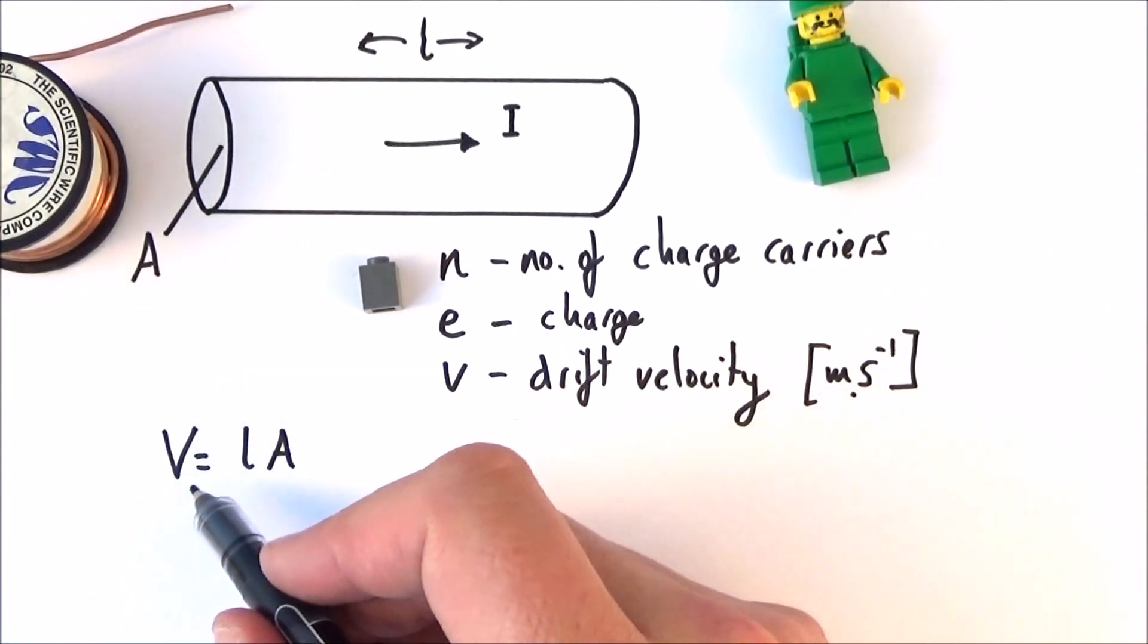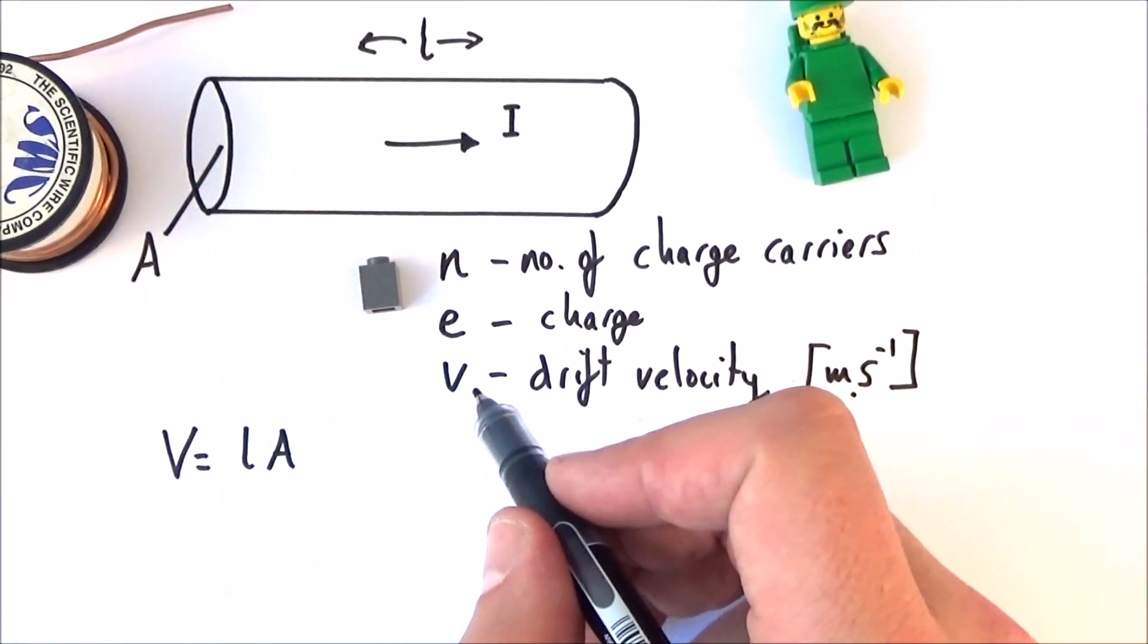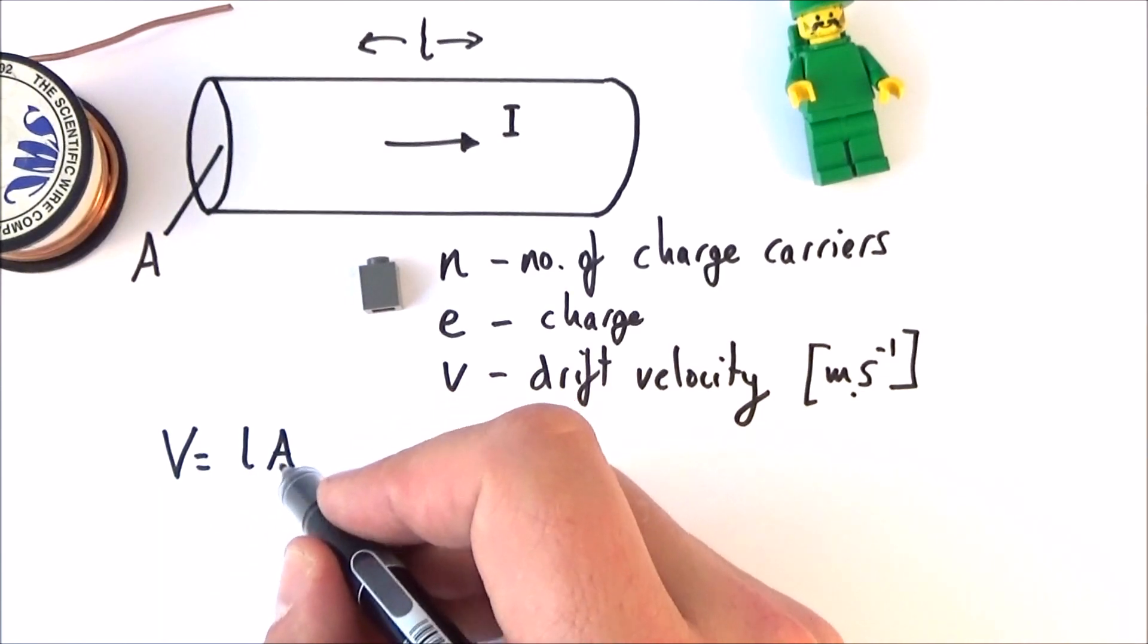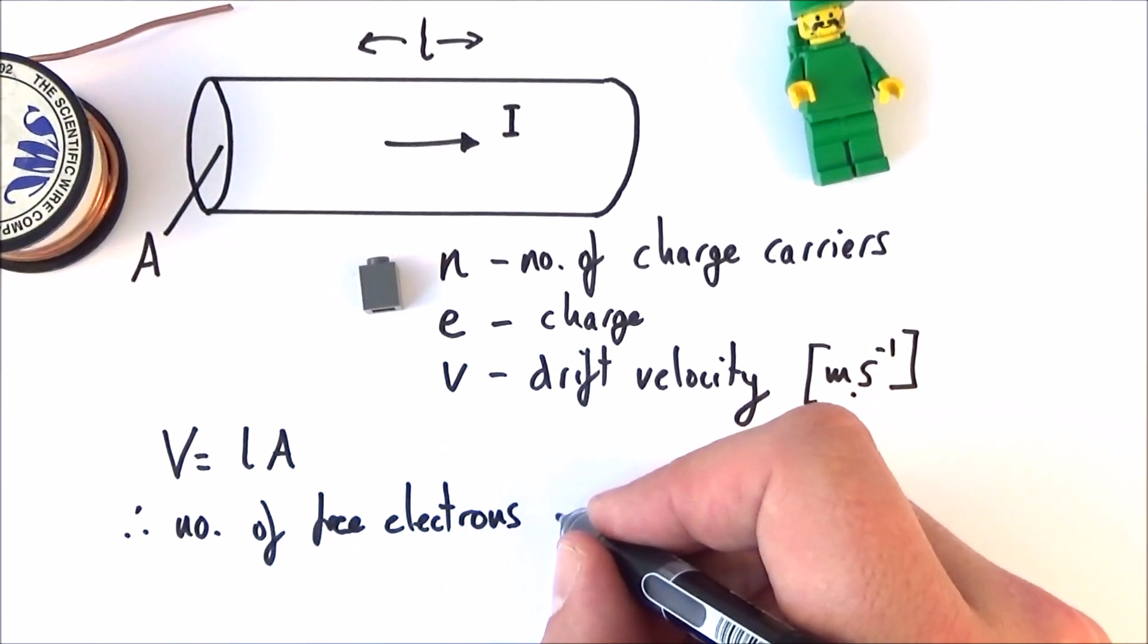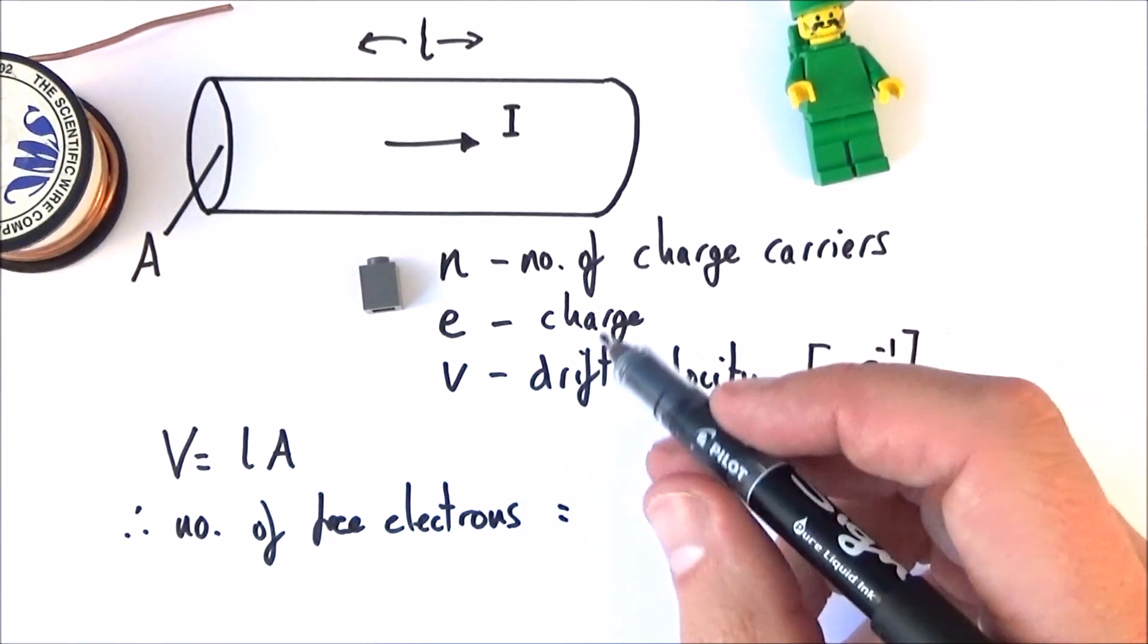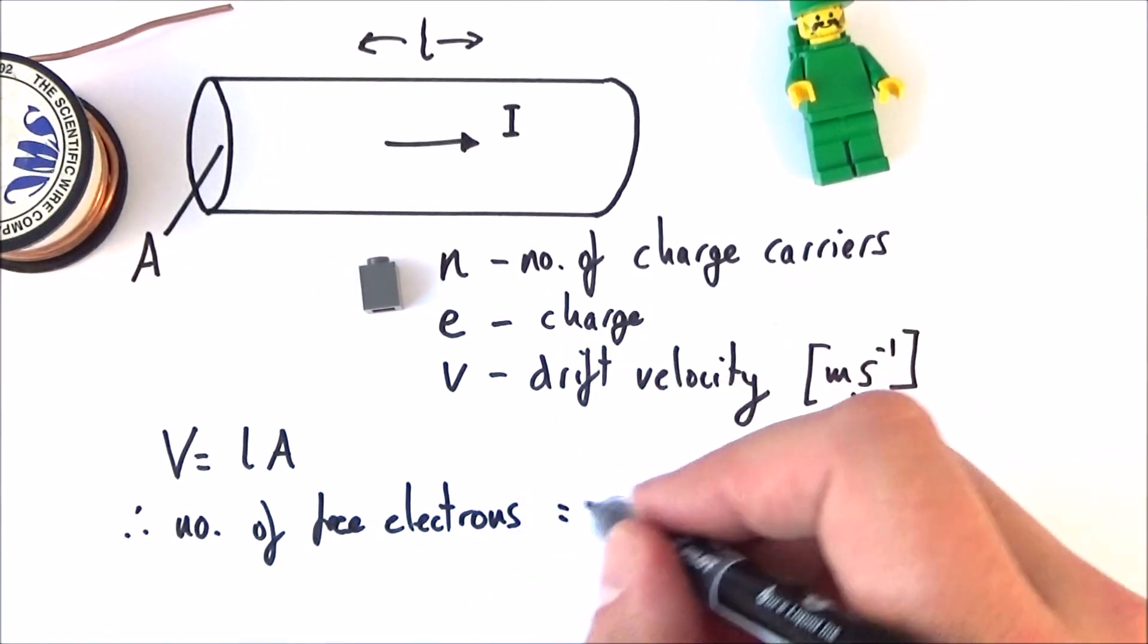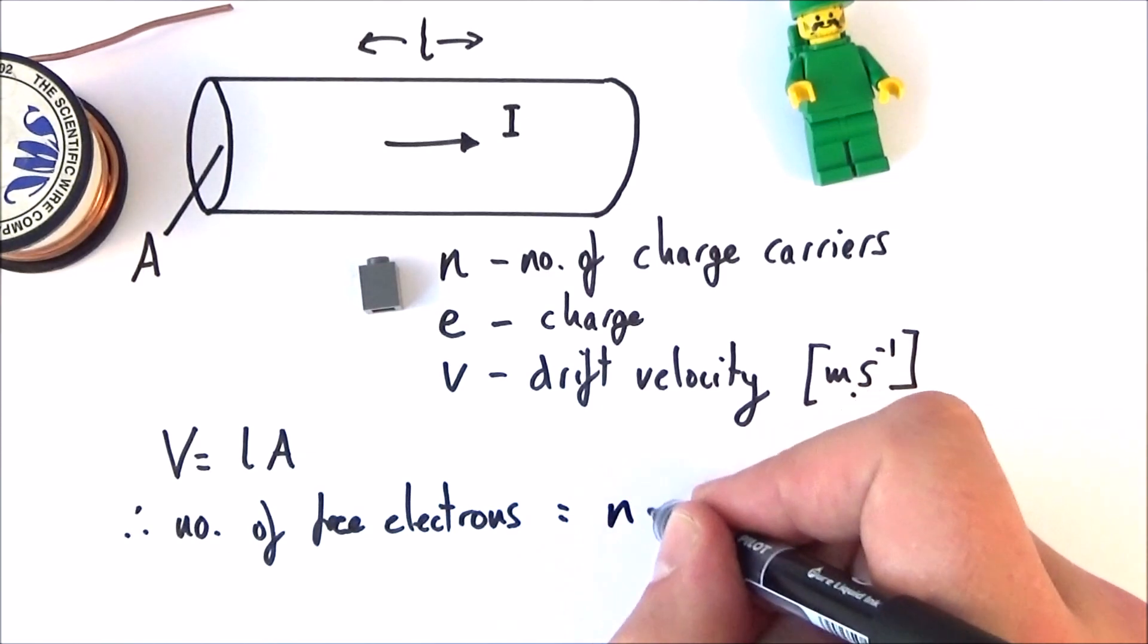So it follows from this that the volume, and I'm using a big V here rather than the small v for the velocity, is equal to the length times area. And therefore, the number of free electrons, or things that can carry charge, is equal to the volume times the charge density, which is equal to nLA.